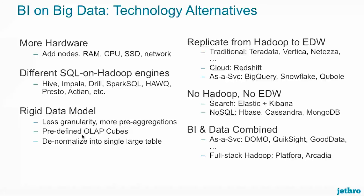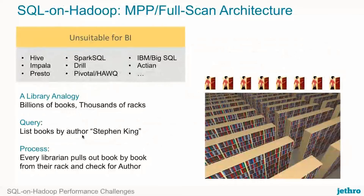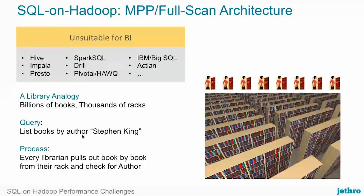Jethro is a SQL engine by nature. All the major SQL on Hadoop engines — Impala, Hive, Spark SQL — are the same: they're all MPP or full scan architecture. Using the analogy of a library with billions of books and thousands of racks, when you query the database looking for books by author Stephen King, each server is going to go out and look at its individual rack of data and go through every single piece looking for Stephen King books. They're going to read a lot of unnecessary data. As you add more data to the data set, it's going to get slower and slower.